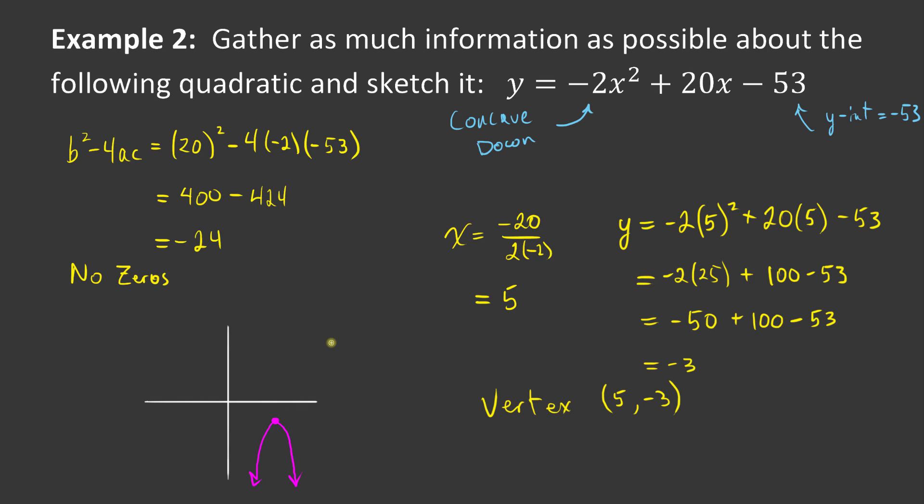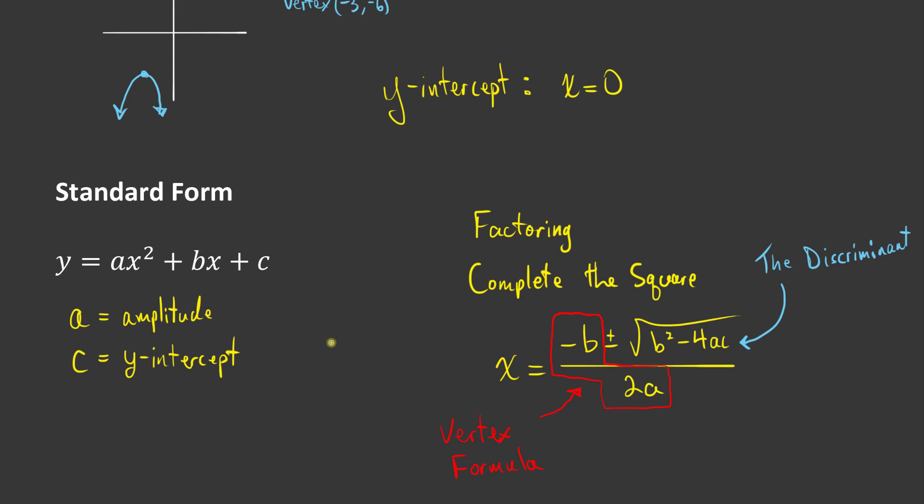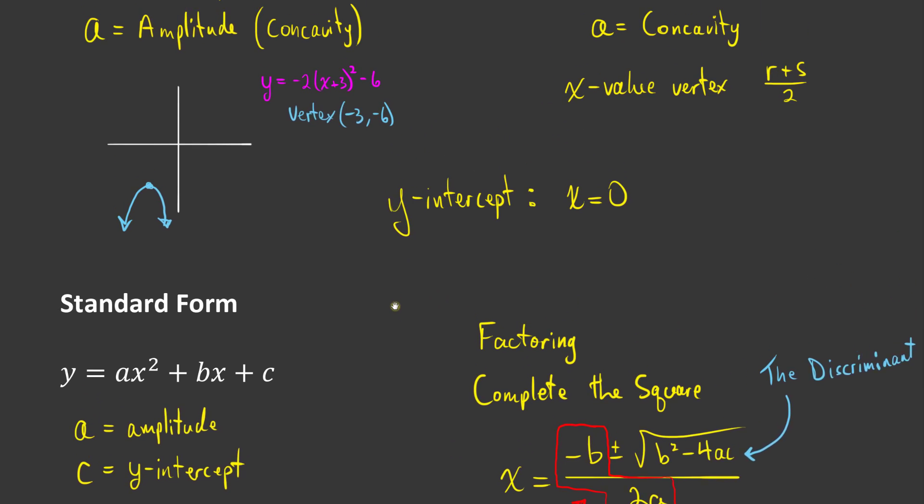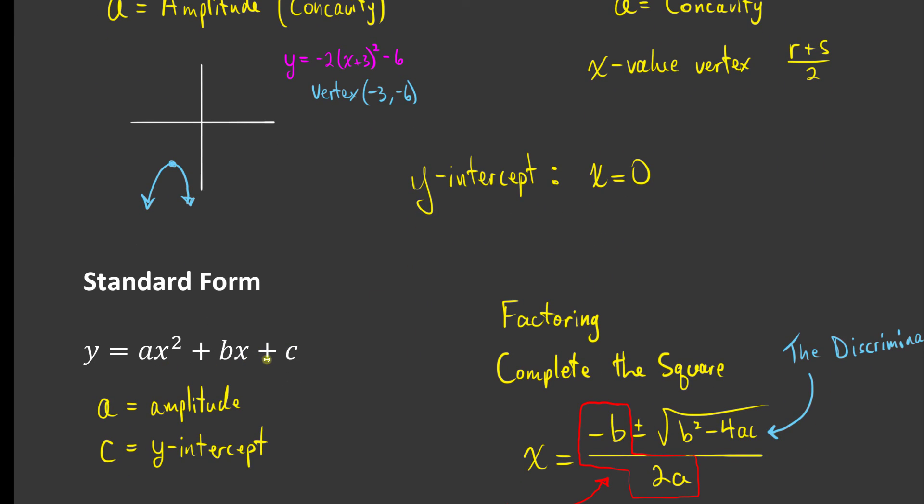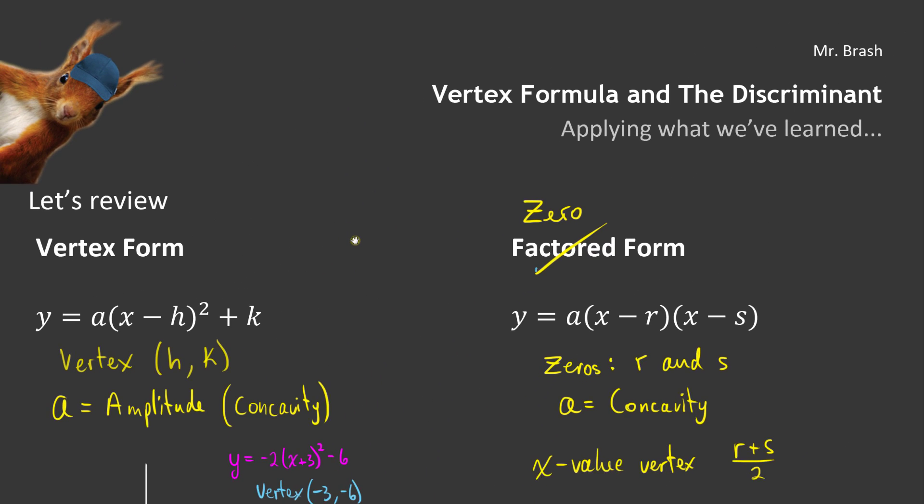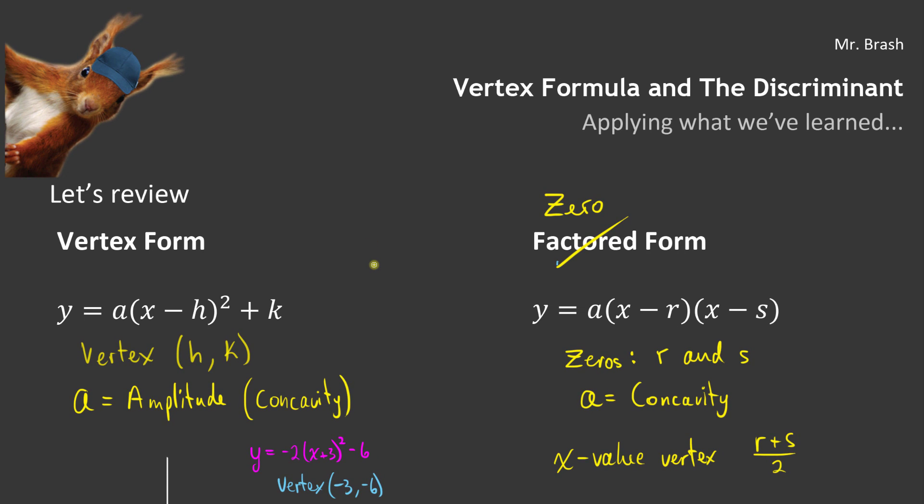All of that really became possible because of what we learned ahead of time. Because we know the quadratic formula, because we know how to complete the square, because we know how to factor, because we know what zeros are—all of these things came together so that standard form can give us a ton of information if we need it to. That was the vertex formula and the discriminant, applying what we've learned. My name is Mr. Brash, this cutie over here is Mr. Squirrel. If you liked that video, give me a quick thumbs up. If you've got something to say, leave a comment. And if you'd like to subscribe to my channel, go ahead and hit me a subscribe. Have a great day, and keep learning math.